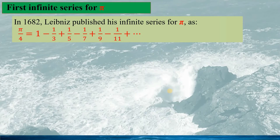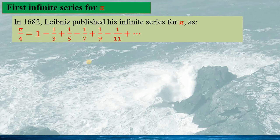In 1682, Leibniz published his series for Pi. Infinite series can be regarded as a game-changer for Pi in the 18th century, since Newton and Leibniz invented calculus. Since then, it would be much easier to calculate Pi than the method based on polygons, as shown in the first part of this series talk.